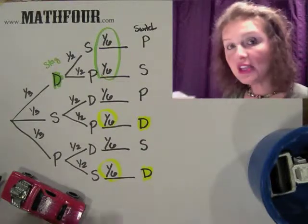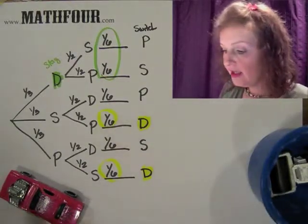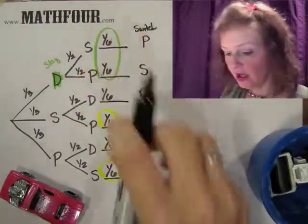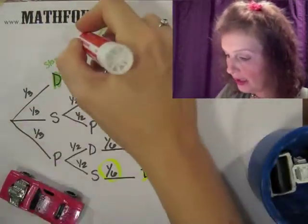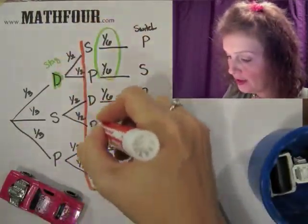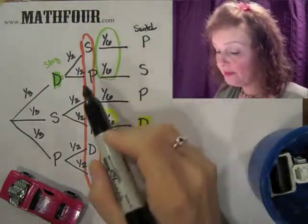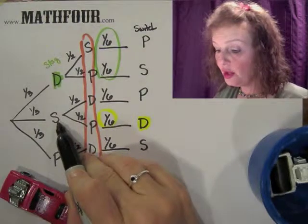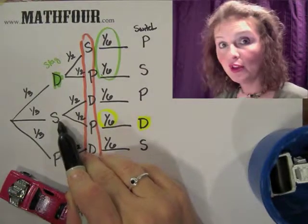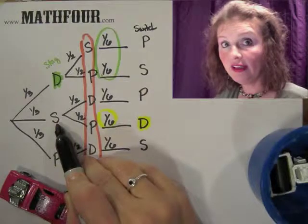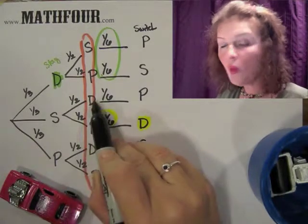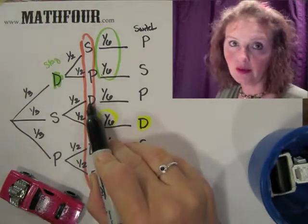This is Monty Hall's choice right here. This is the door he's opening. Well, guess what? If you chose the door that has the steamroller behind it first, there's no way he's going to open the DeLorean, right?